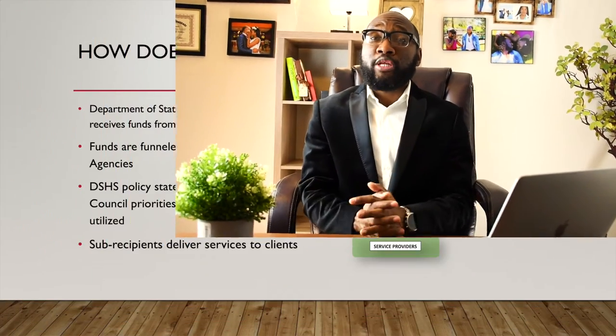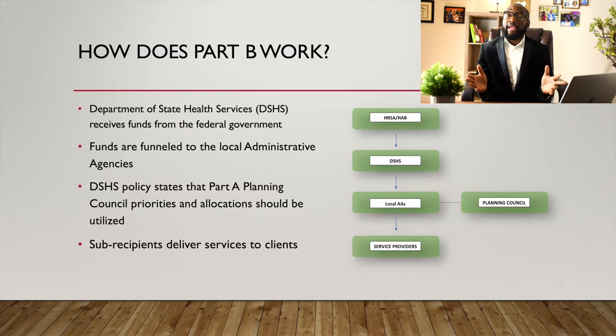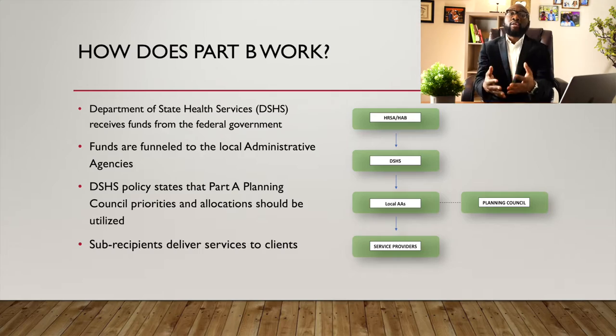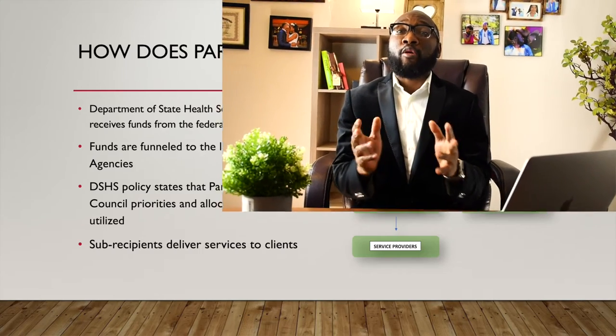How that works is pretty much the same thing as Part A. HRSA receives the money from the federal level and allocates the money to the Department of Health and Human Services. The Department of Health allocates the money to the local administrative agent. The local administrative agent, working with the planning council, delivers the money to the sub-recipient or providers, and the provider delivers the service to the people living with HIV and AIDS.